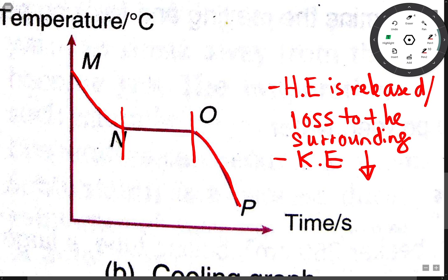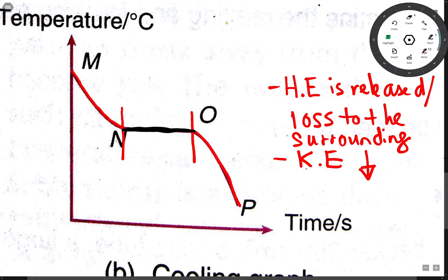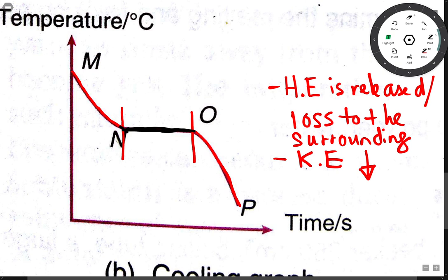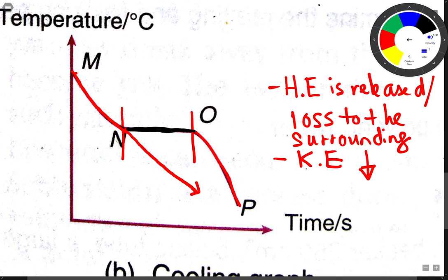Now why does the temperature remain constant at this part? You can see that when cooling occurs, heat energy continues to be lost. But why, starting from N, does the temperature remain constant? Because the liquid particles here — when you look at the liquid particles, they are still close to each other but not arranged in an orderly manner.